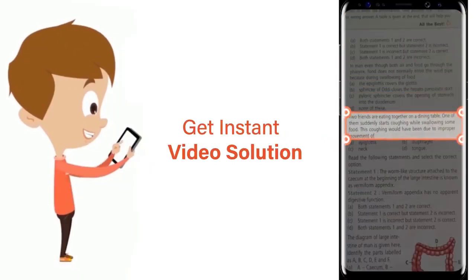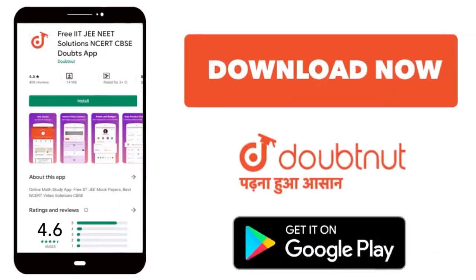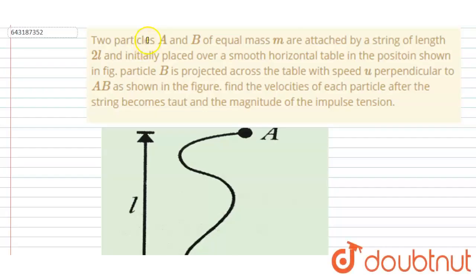Hello everyone. Two particles A and B of mass m are attached by a string of length 2l. Initially they are placed over a smooth table in the position shown in the figure.